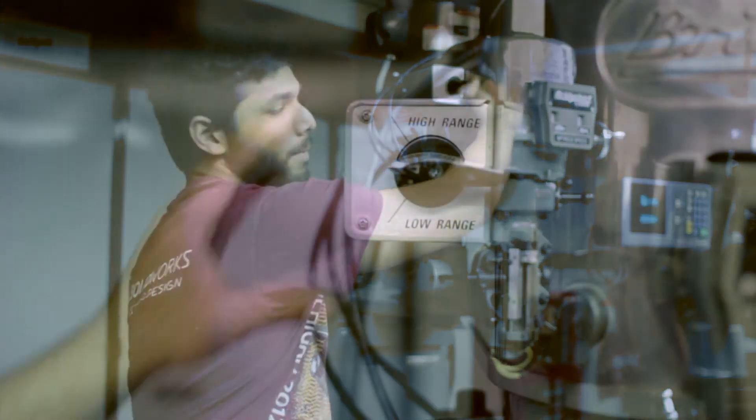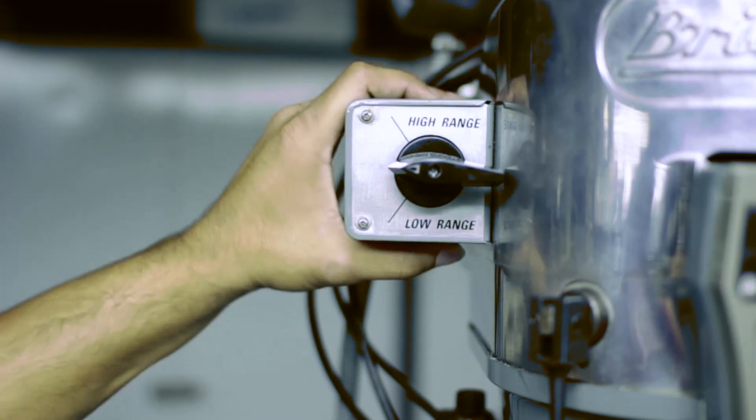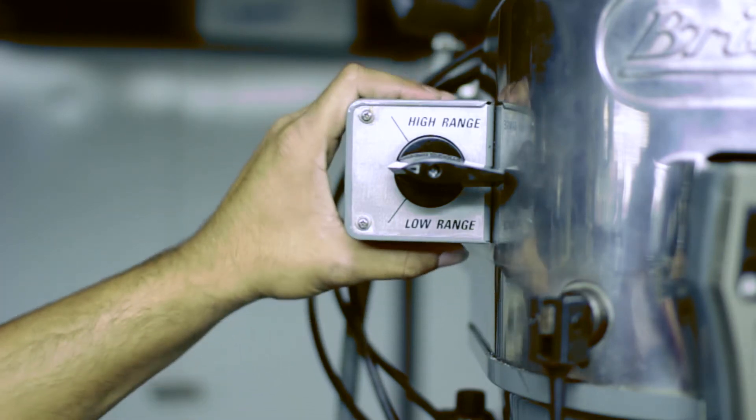To turn on the machine, we're going to use the power switch located up here. There are two settings on the power switch: high range and low range. Before we can turn on the machine, you have to make sure it's in the right gear.